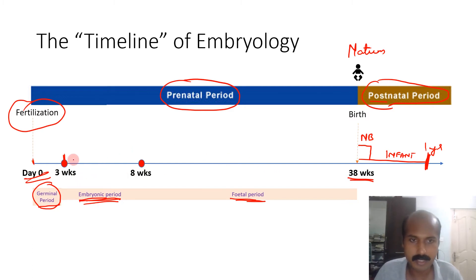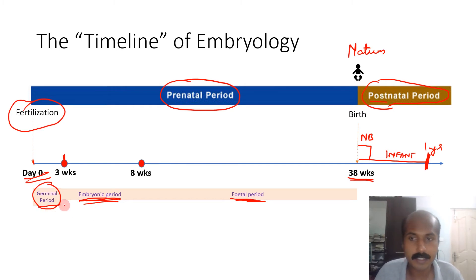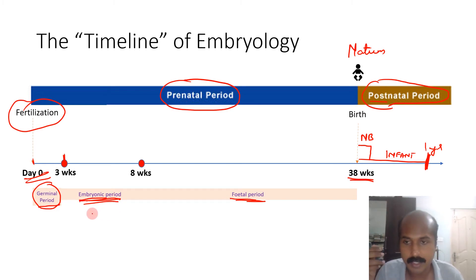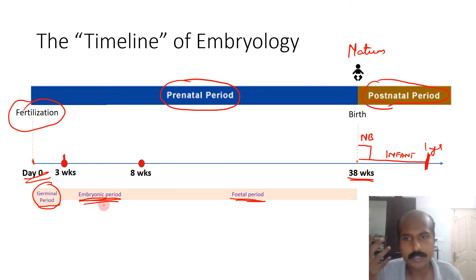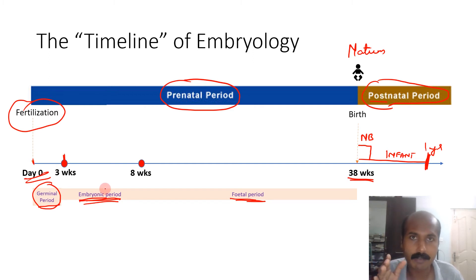The embryonic period — specifically the third to eighth week — is also very important because this is when most organogenesis occurs. Up until then you had only cell aggregations, but in the embryonic period these develop into specific tissues and organs. That is why this time period is also called the period of organogenesis, and it is a very critical time for fetal development.